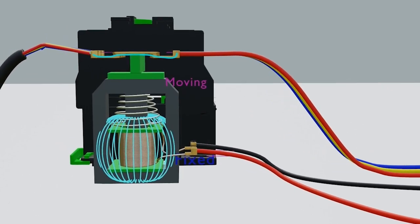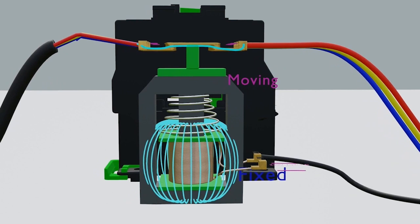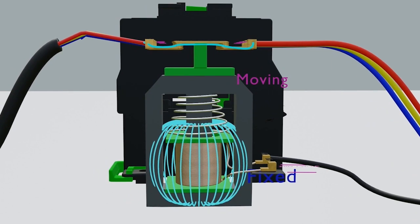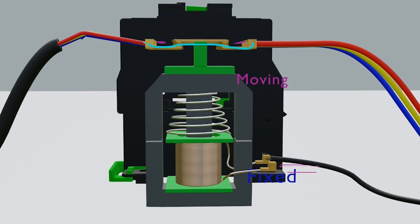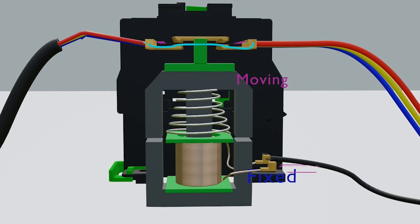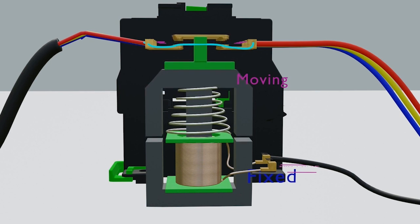As you remove your finger from the start pushbutton, then it will cut down the phase, so A1 supply gets removed. Due to that, coil will get demagnetized and moving part will move upside as you see here due to this spring tension. Hence, contactor also gets separated and supply will be discontinued from source to load.